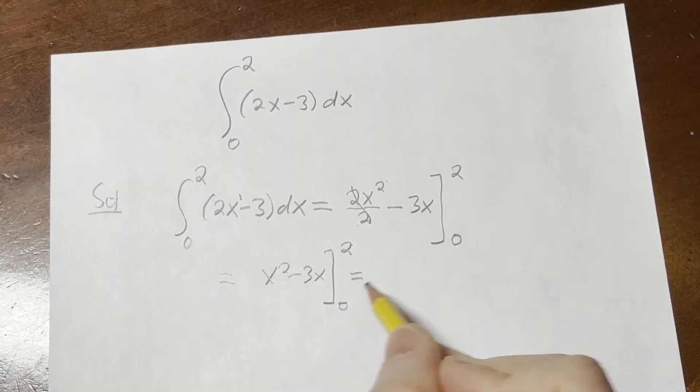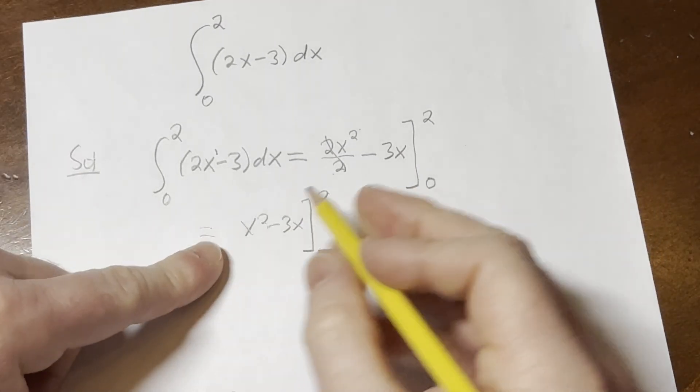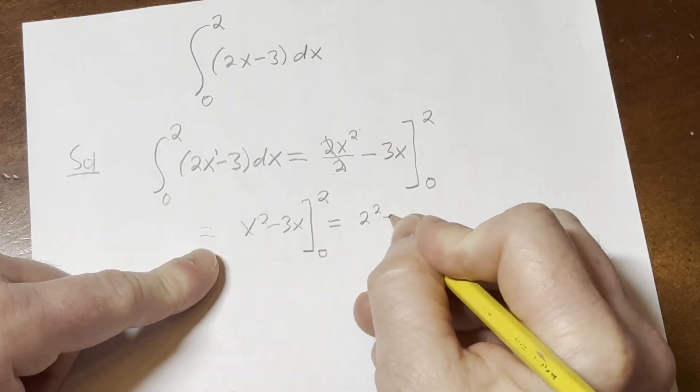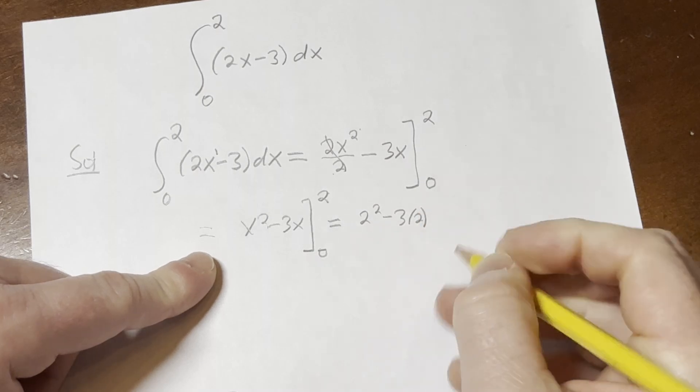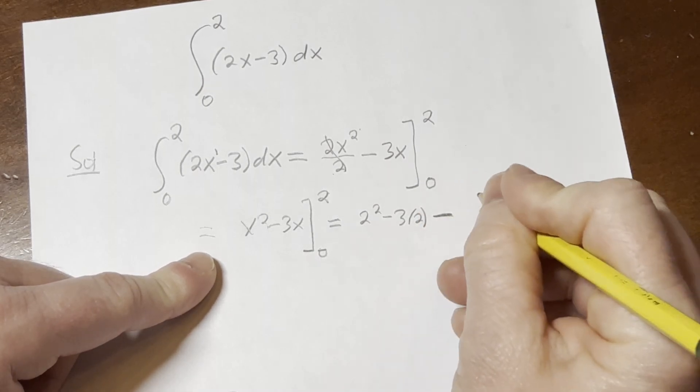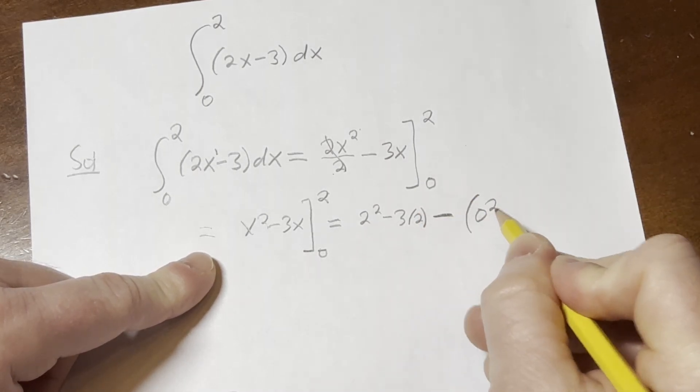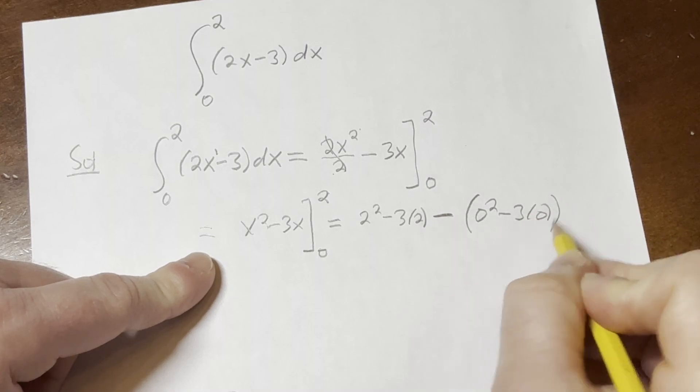You first plug in the 2, subtract, then plug in the 0. So plugging in the 2, we'll get 2 squared minus 3 times 2. Then we subtract, and then we plug in the 0. So 0 squared minus 3 times 0.